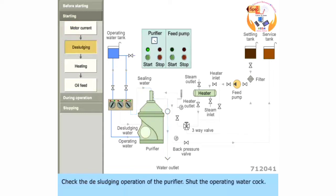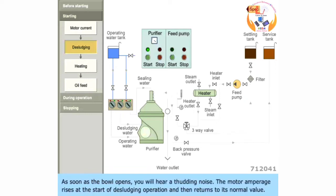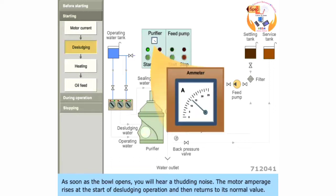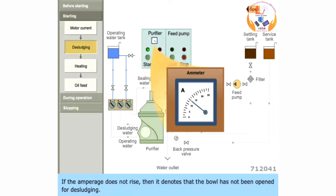Check the desludging operation of the purifier. Shut the operating water cock. Open the desludging water cock for 5 seconds, then shut the cock. As soon as the bowl opens, you hear a thudding noise. The motor amperage rises at the start of desludging operation and then returns to its normal value. If the amperage does not rise, then it denotes that the bowl has not been opened for desludging.